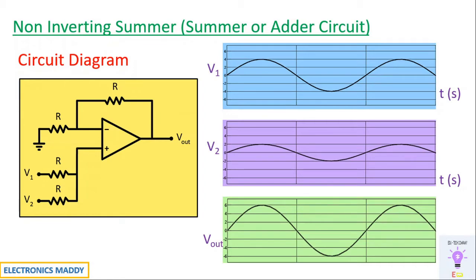One of the most important points to remember is that a non-inverting summer is also referred to as a summer or adder circuit with respect to operational amplifiers.